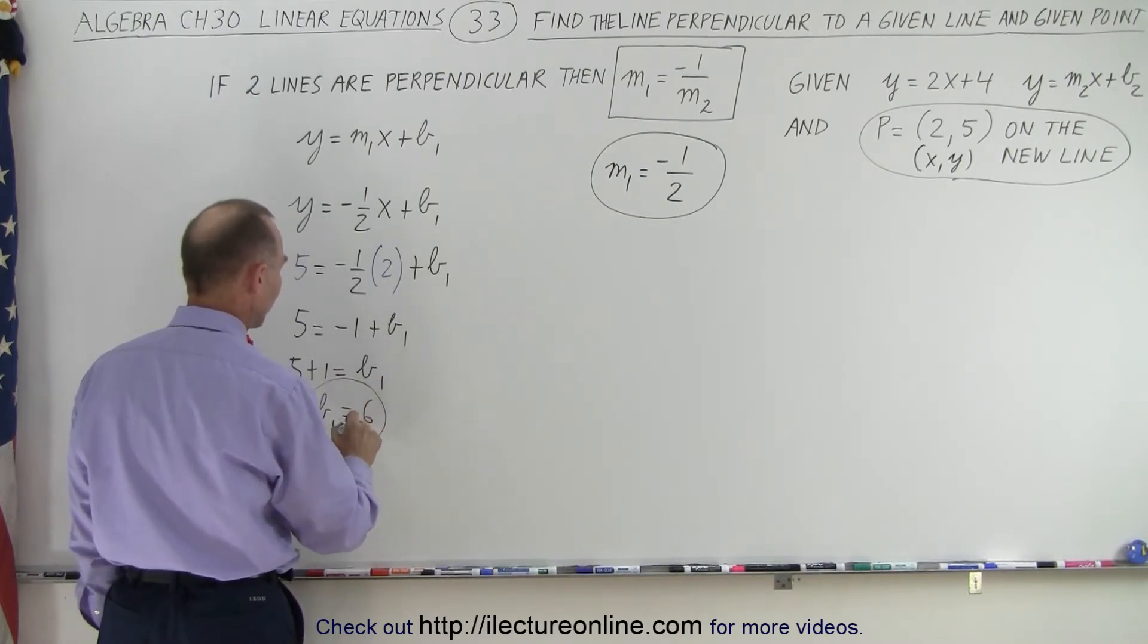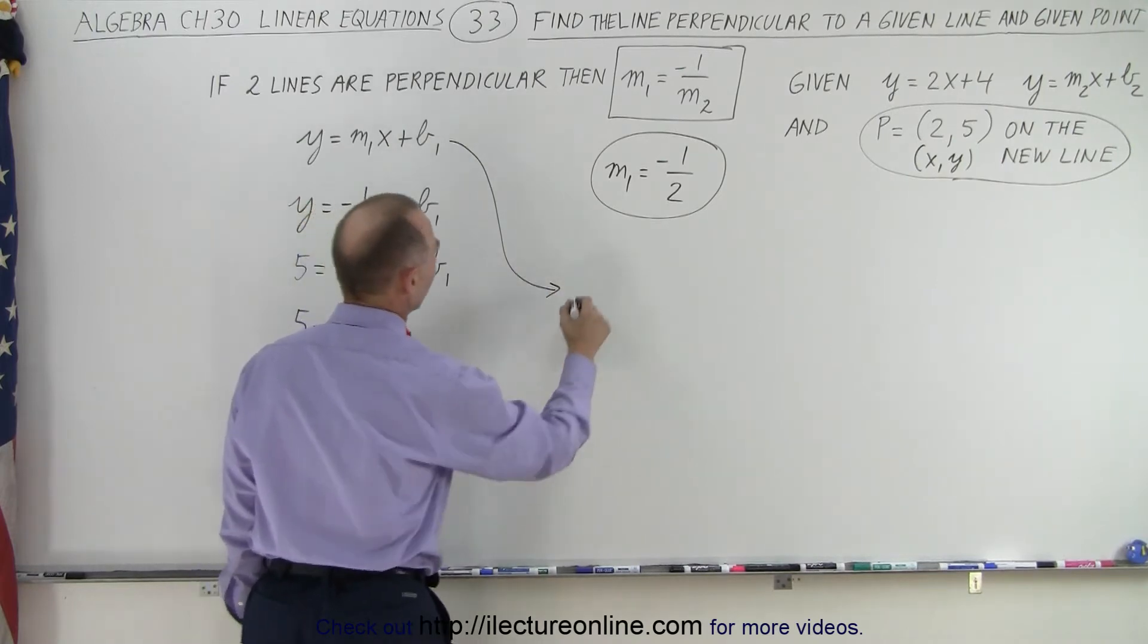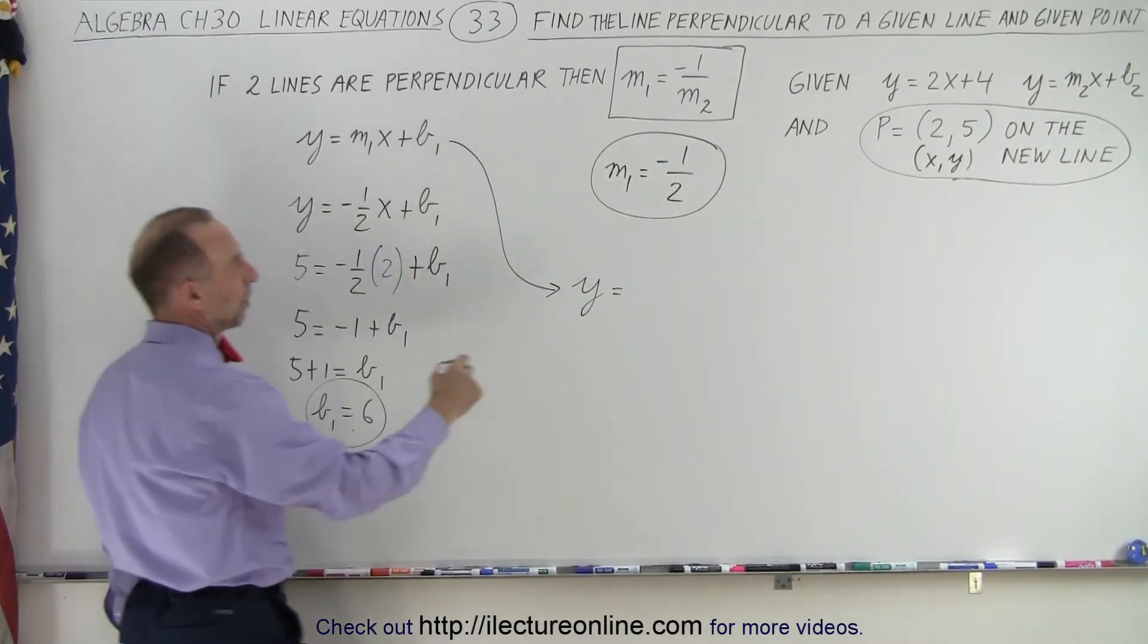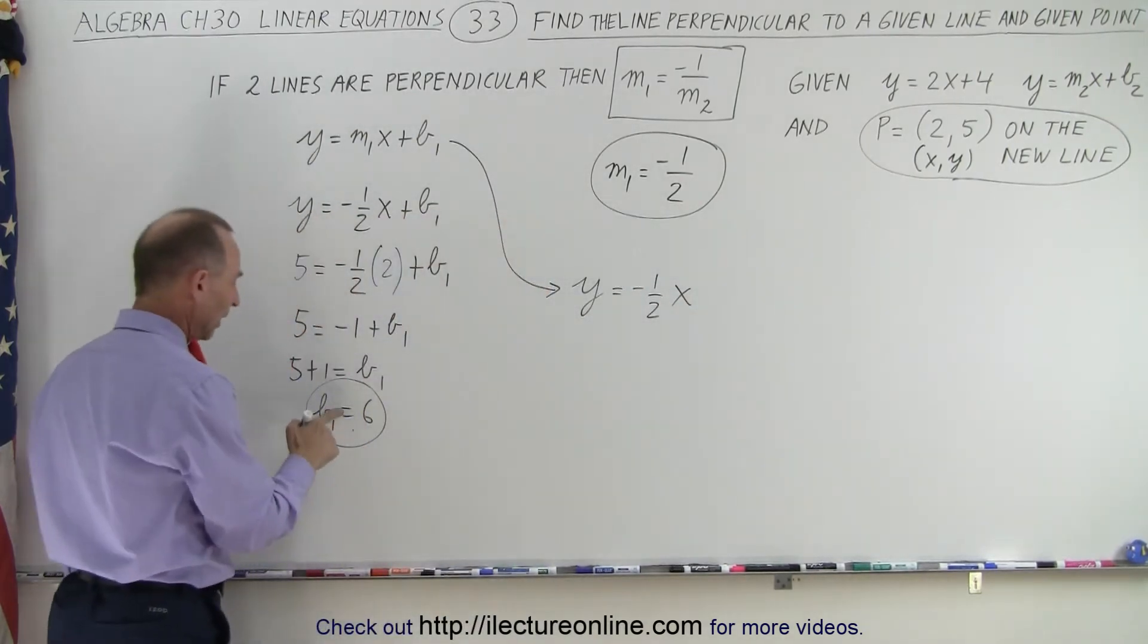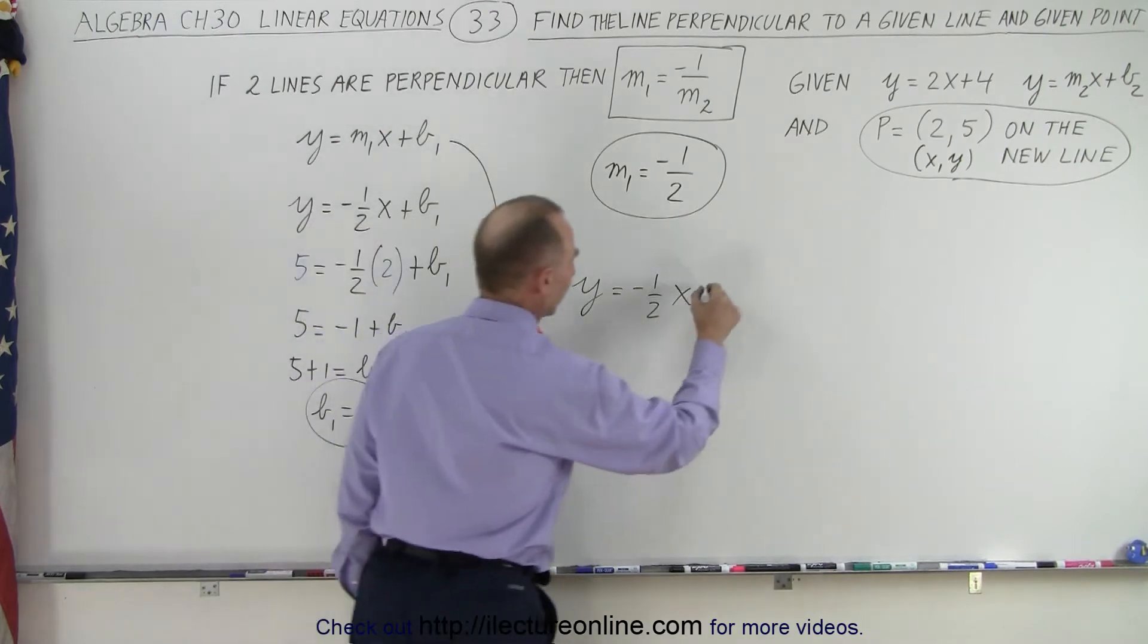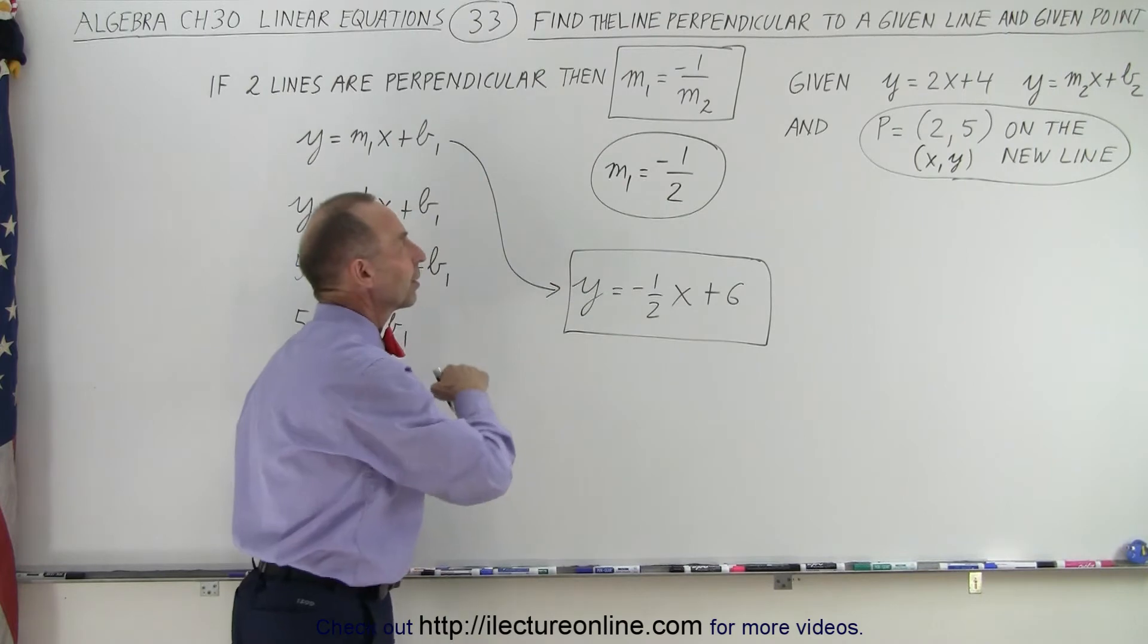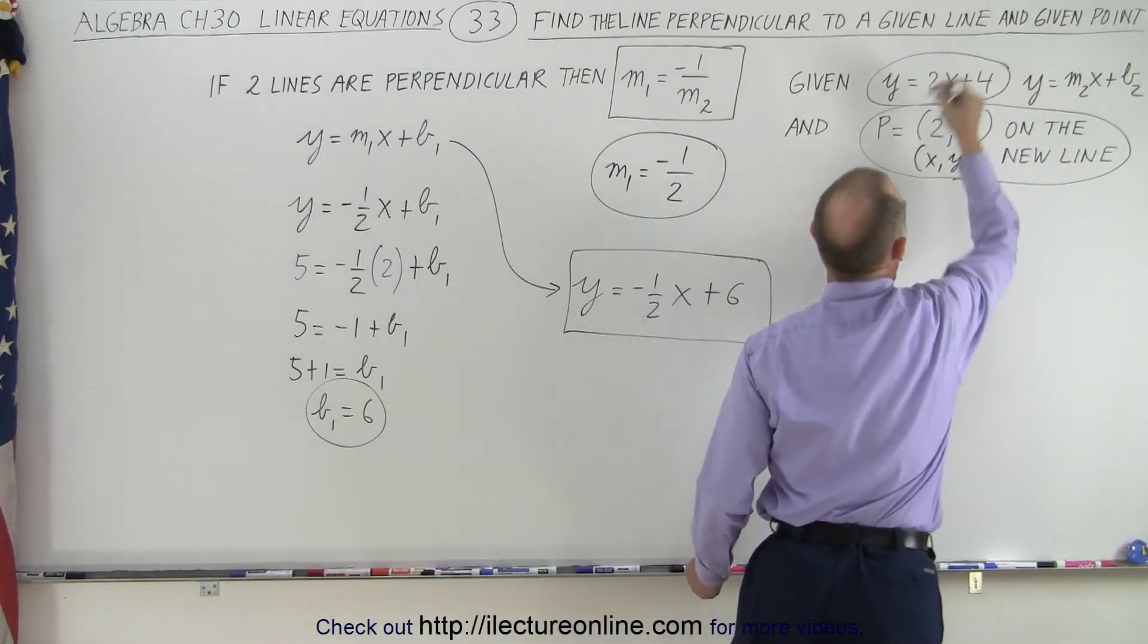So now that we also have b1 and we have m1, now we can see that this equation we're looking for can be written as y is equal to m1 x. m1 is minus 1 half plus b1, and b1 is equal to 6. And now we found the specific equation which is perpendicular to the original line that was given to us of y equals 2x plus 4.